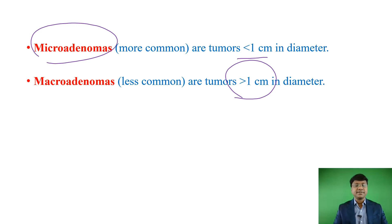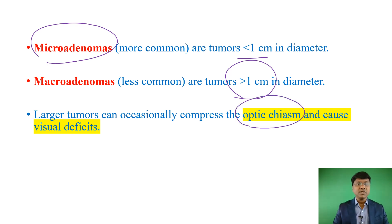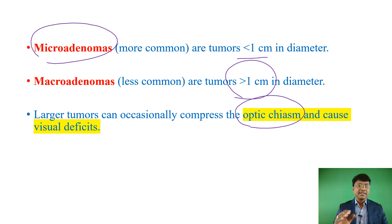Clinically, how are they different? In micro adenomas, you will have only endocrine manifestations, whereas in macro adenomas, along with endocrine manifestations, you also have the mass effect on surrounding structures. If the tumor is large, it can compress the optic chiasma, causing visual impairment — that is the clinical difference of macro adenomas from micro adenomas.